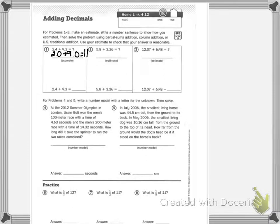Now, let's check. 2.4 plus 9.3. 4 plus 3 is 7, 2 plus 9 is 11. So, is that pretty close? You bet.